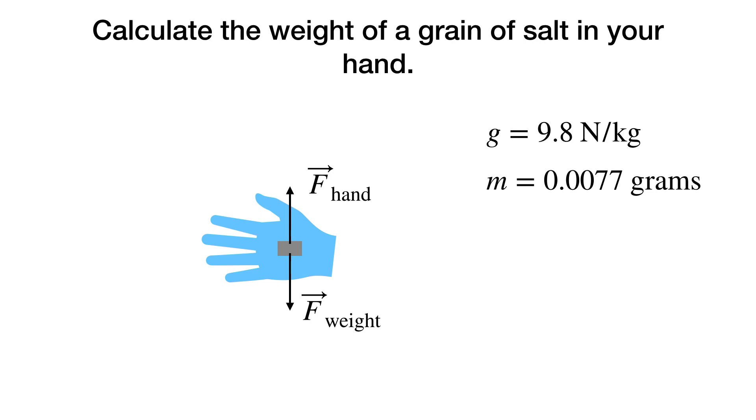Suppose you had a grain of salt in your hand. A grain of salt is like one of the smallest things you could pick out individually. How would that feel? That grain of salt has a net force of zero since it's at rest, so the hand's pushing up and the gravitational force pulls down. What would that force on the hand be? Let's say the salt has a mass of 0.0077 grams. I actually measured that for you.